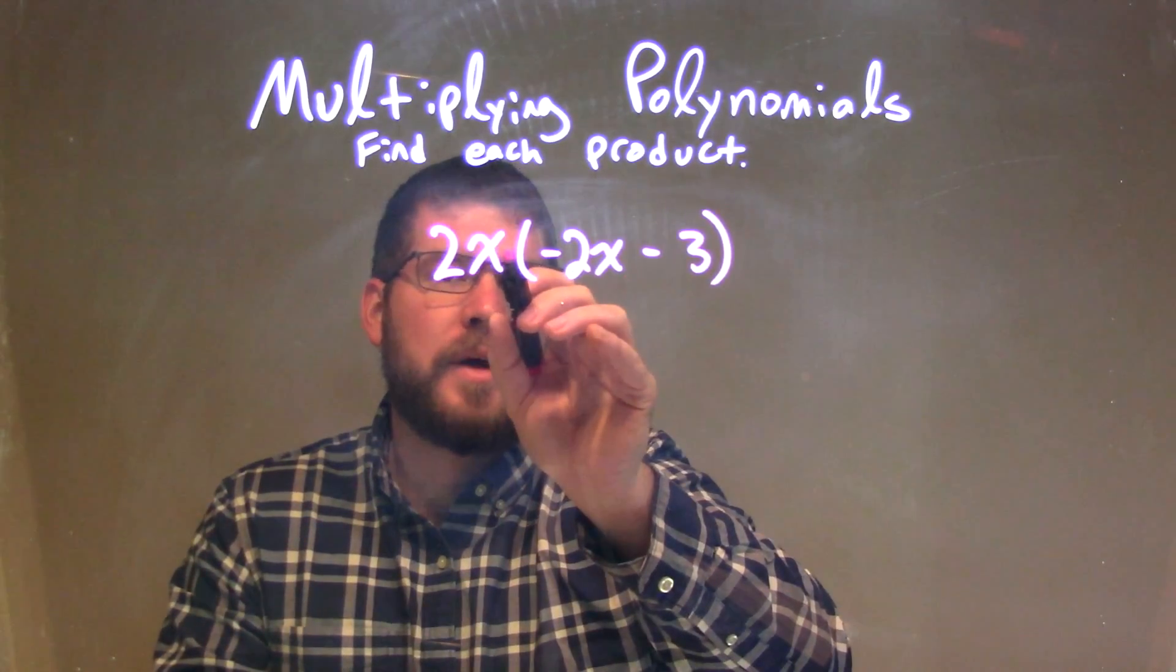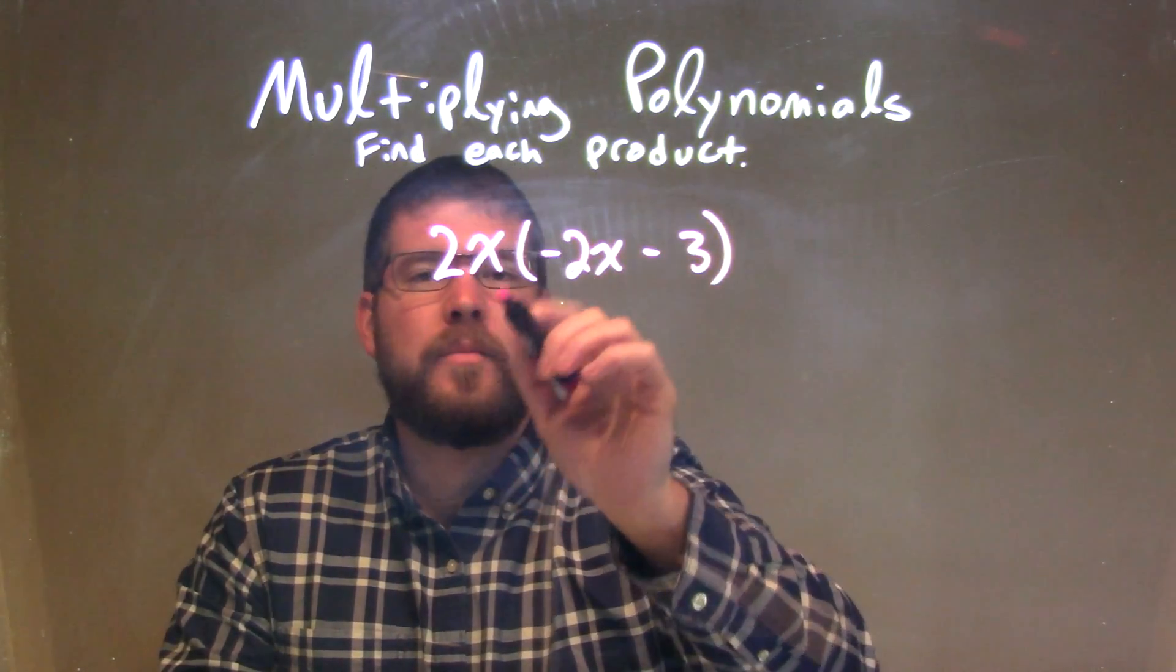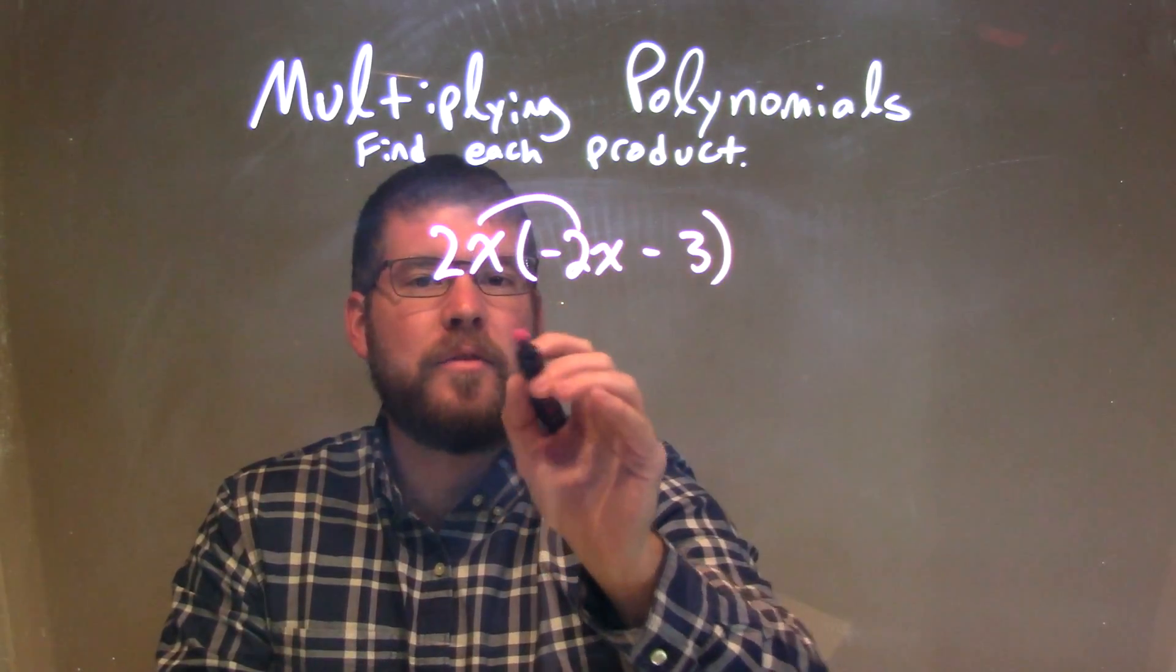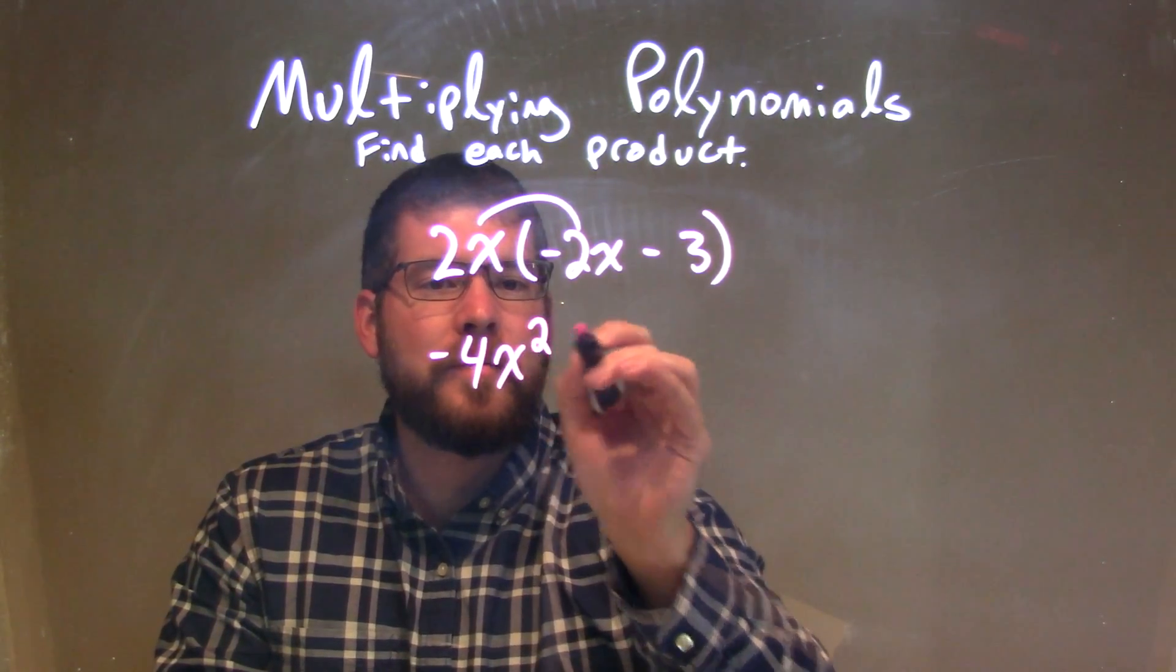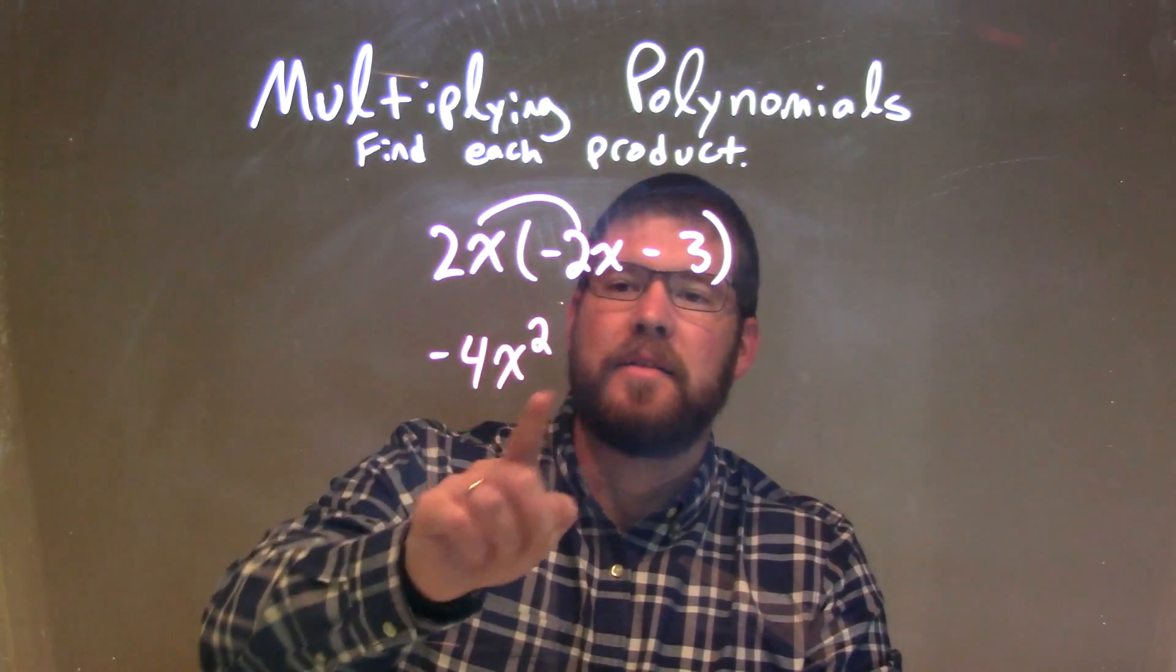So I'm going to distribute now and multiply this 2x to both parts in the parenthesis. So 2x times negative 2x is negative 4x squared, because the x times x is the x squared.